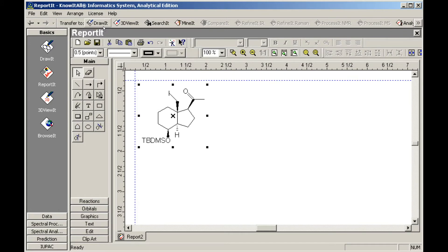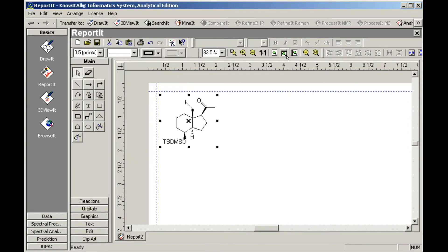We'll adjust the work area so we can see the entire page width. Click the Fit to Page Width button on the Zoom toolbar, then drag the scroll bar to center the page in the main window.